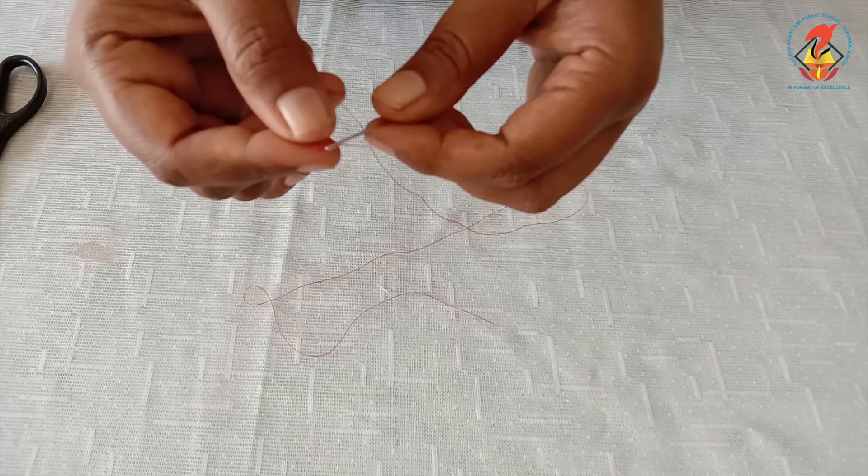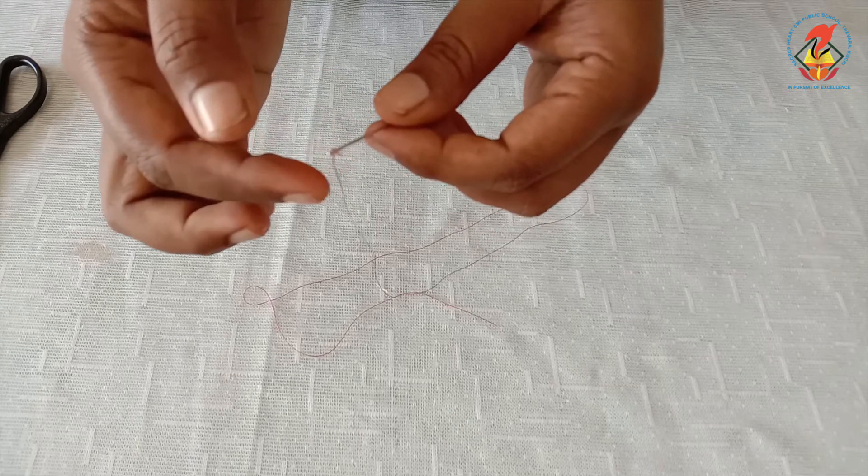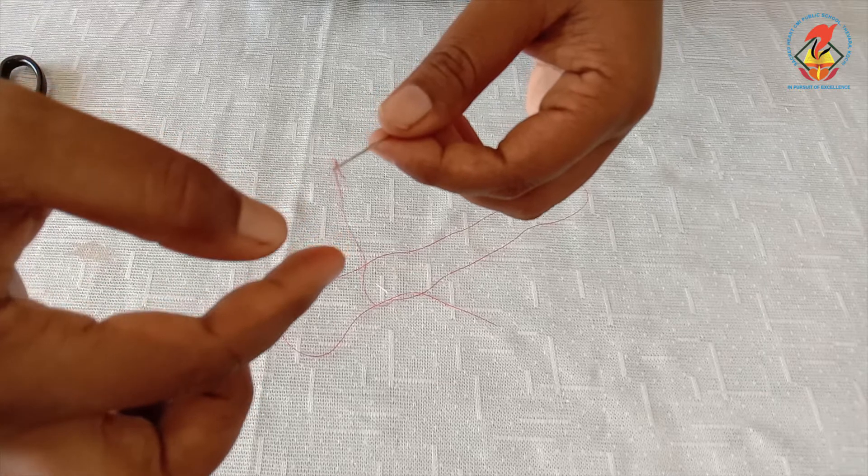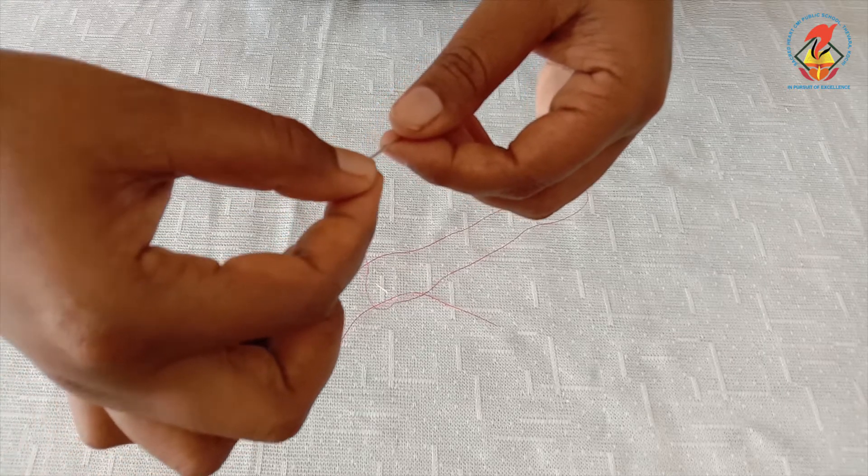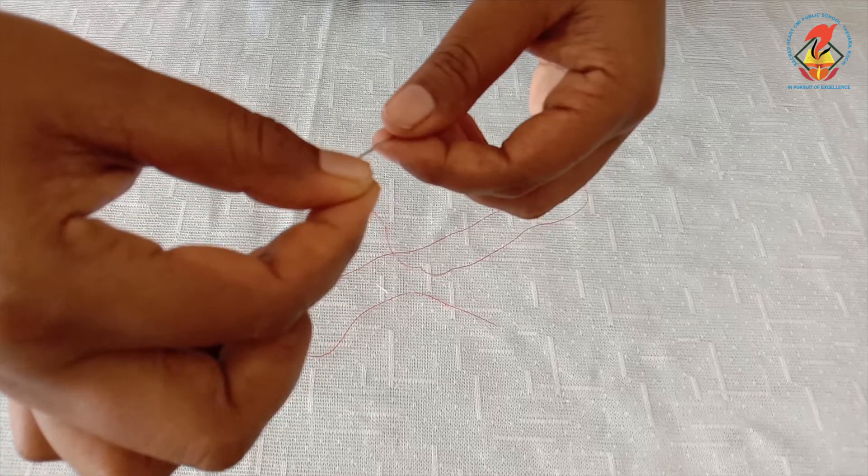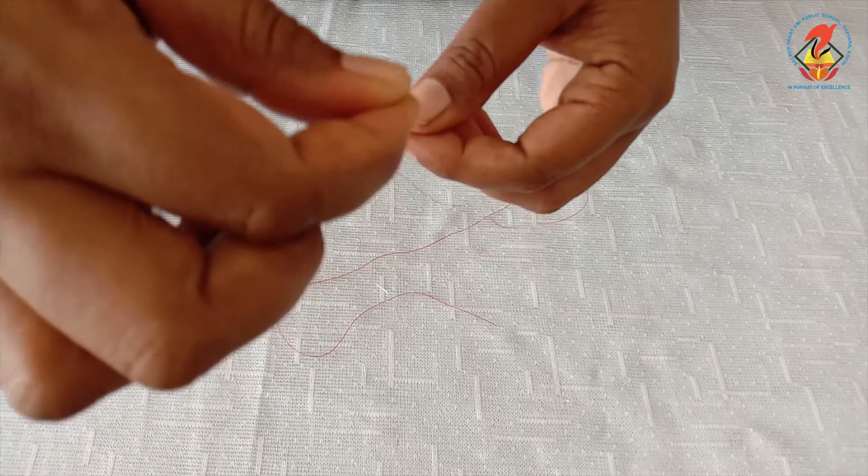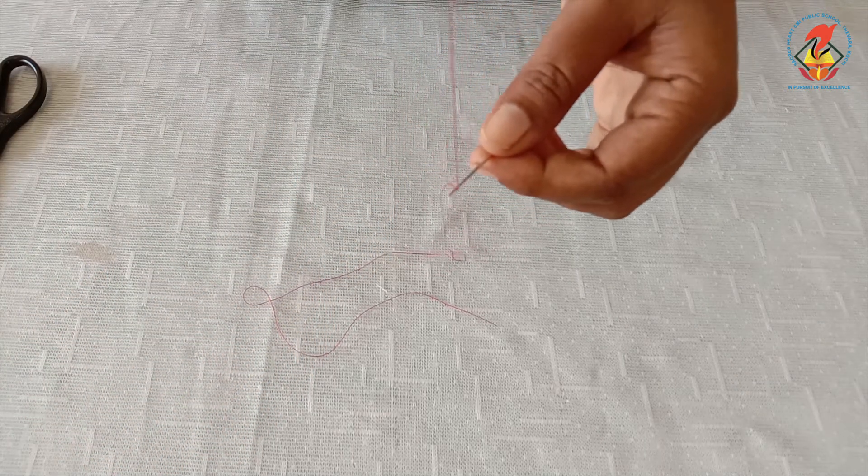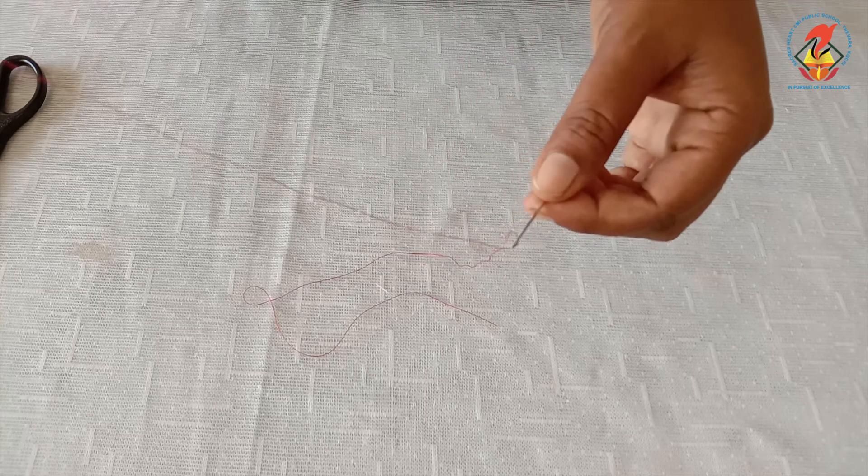Once the thread has passed the hole, pinch the top of thread using thumb and index finger and pull it through the eye. Now, drag till half of the thread.